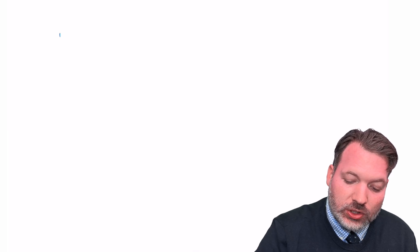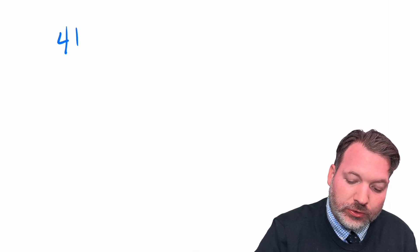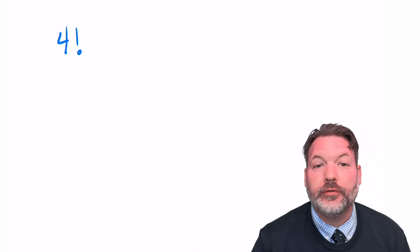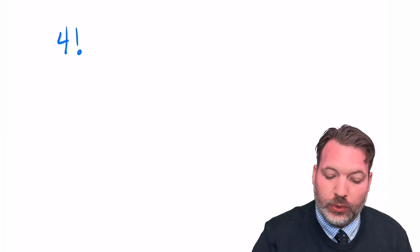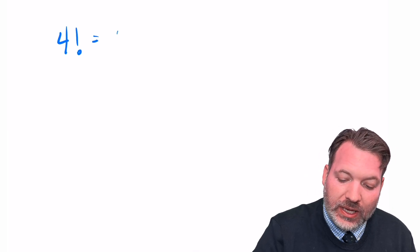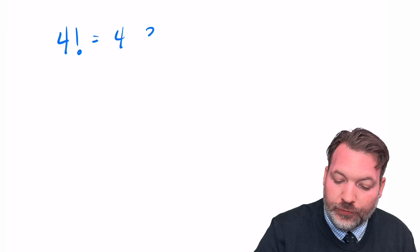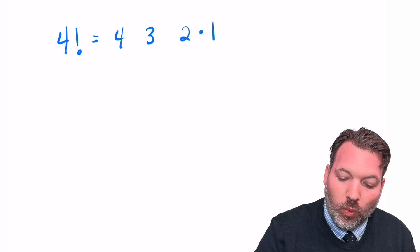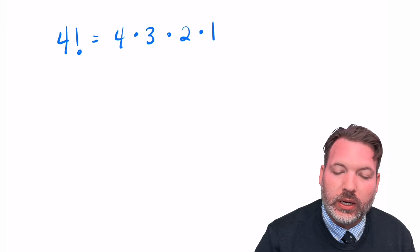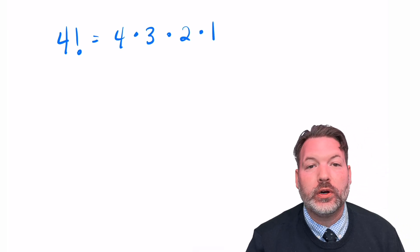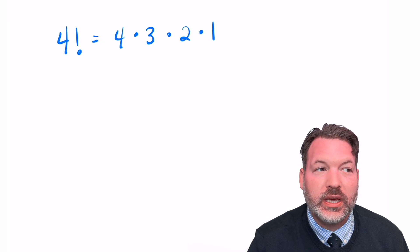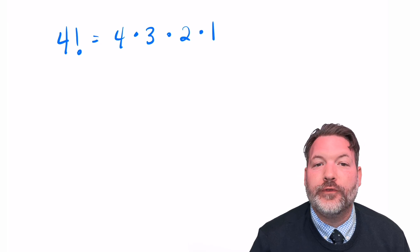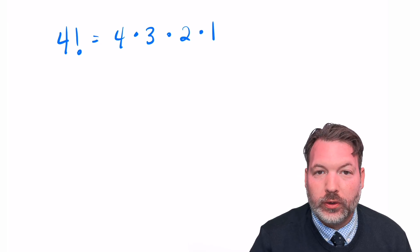A pretty typical way to introduce the factorial is to say: start with some natural number, like 4 for example, and then count down to 1 — 4, 3, 2, 1. The product of those 4 natural numbers is what we call 4 factorial.